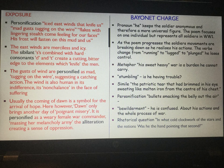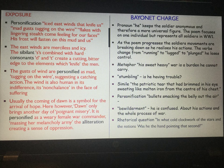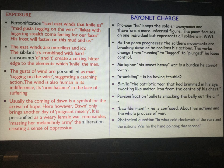With 'Bayonet Charge', we get the pronoun 'he' — the soldier is anonymous and therefore becomes a more universal figure, as if it could be any soldier. So whilst the poem focuses on one individual, it actually represents all soldiers in World War I. As the poem progresses, the soldier's movements break down as he realises his actions. Ted Hughes changes the verbs throughout — from something simple like 'running', to 'lugged', to 'plunged' — and we steadily see the loss of control and the panic of the soldier.